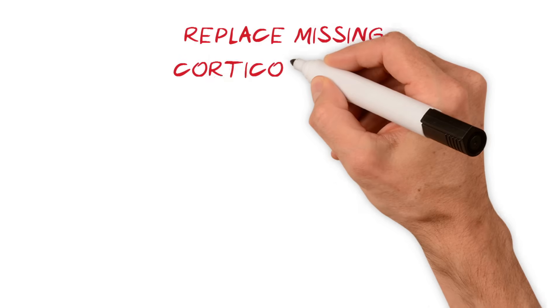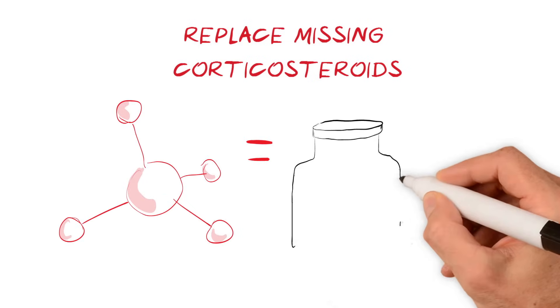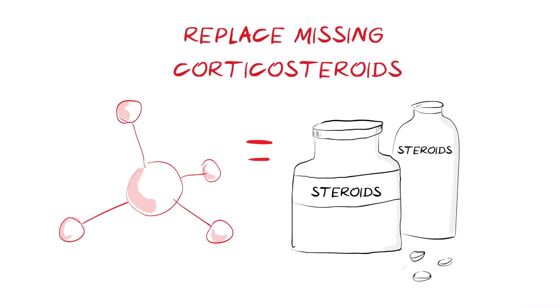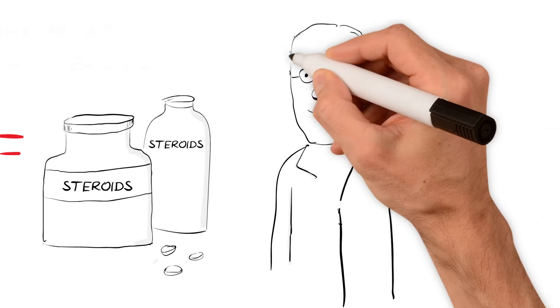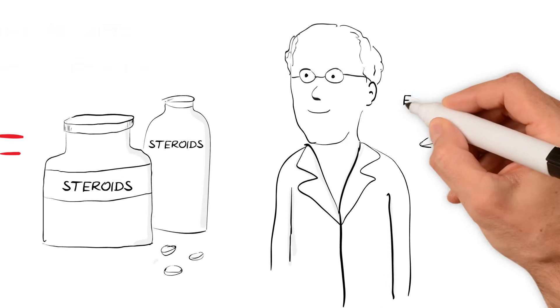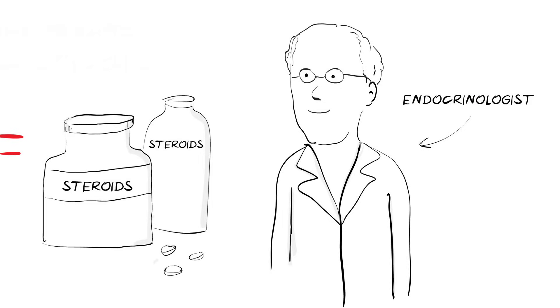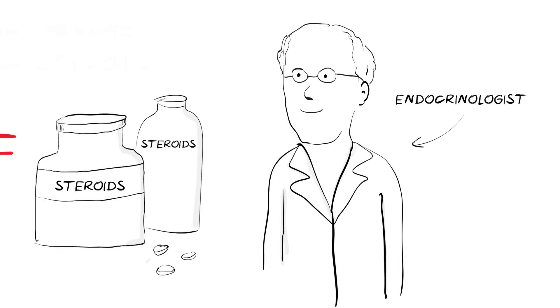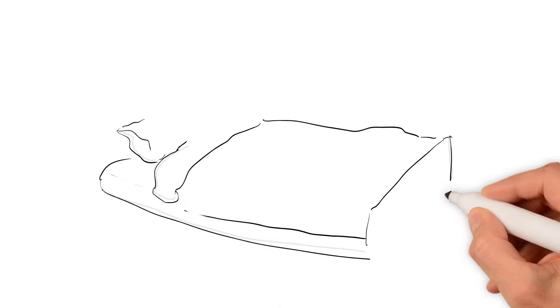Treatment for CAH involves replacing the missing corticosteroids with steroid medication, which is taken regularly by mouth. The treatment needs to be taken lifelong, under the guidance of a hormone specialist called an endocrinologist, for routine follow-up and dose adjustment. The dose may particularly need adjustment during periods of illness, when the body's need for corticosteroids increases.